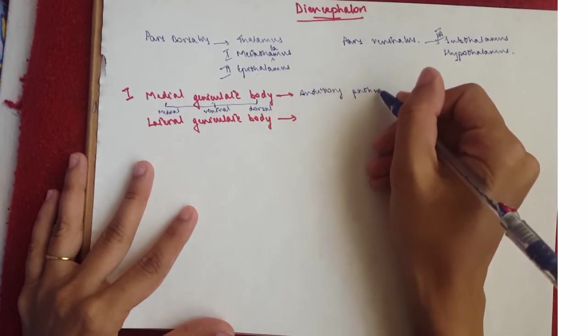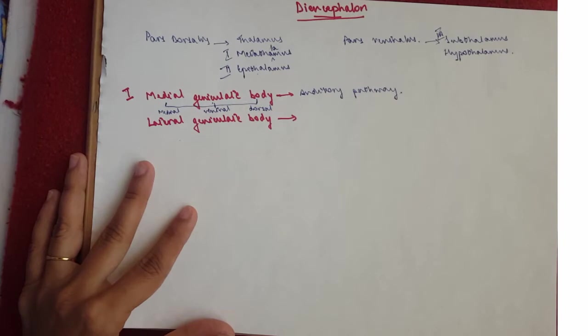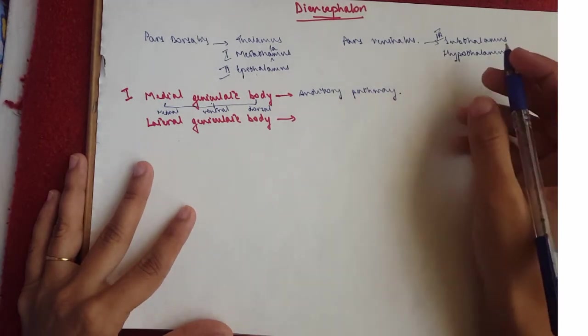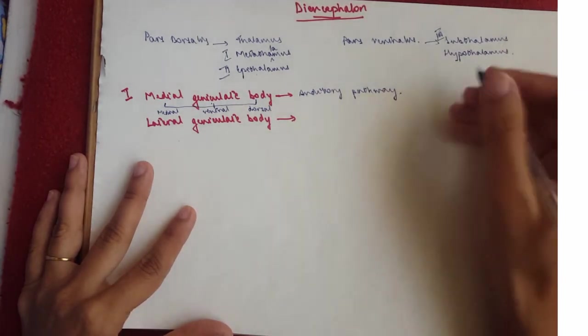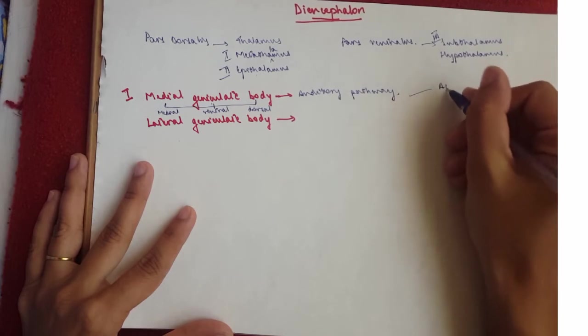So it receives from the inferior colliculus, if you remember, of the midbrain and goes to the auditory cortex, like 22, 40, and that would be acoustic radiation.